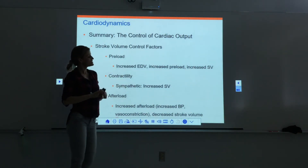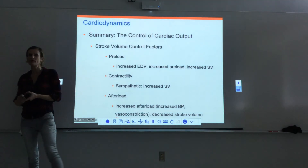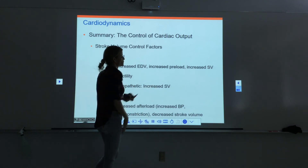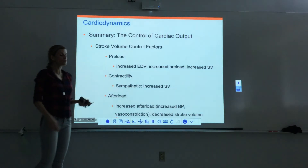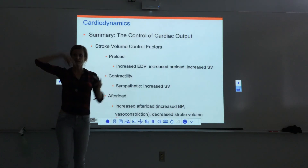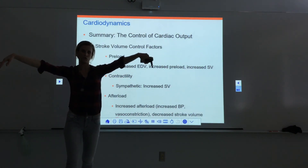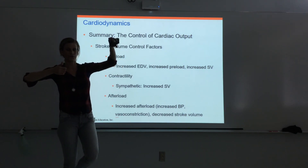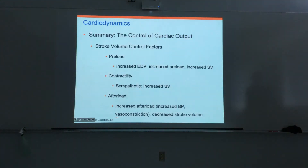Contractility is affected by the sympathetic nervous system via both epinephrine and norepinephrine. Epi and norepi tell the heart to contract harder, which increases stroke volume and cardiac output. Afterload is the opposite — it's the pressure in the vessel that must be overcome to move forward. The more afterload, the lower the stroke volume and cardiac output. They vary inversely.